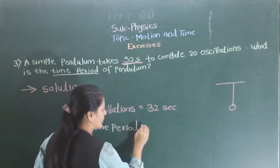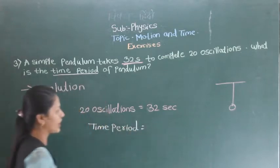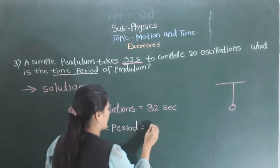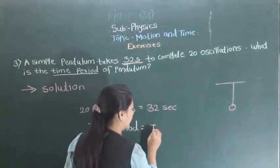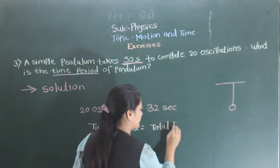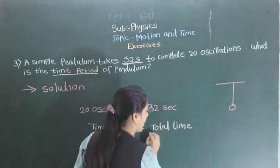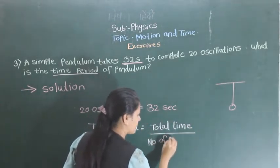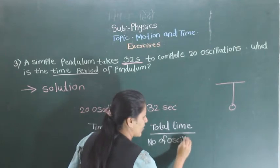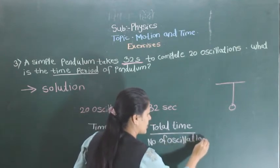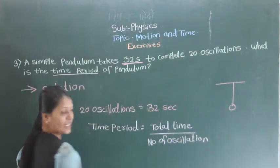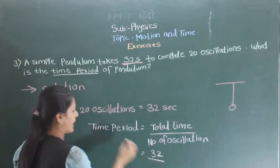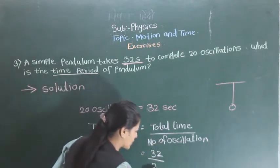So what will we use? Number of seconds means total time upon number of oscillations. So what is the total time? 32 seconds divided by 20 oscillations.